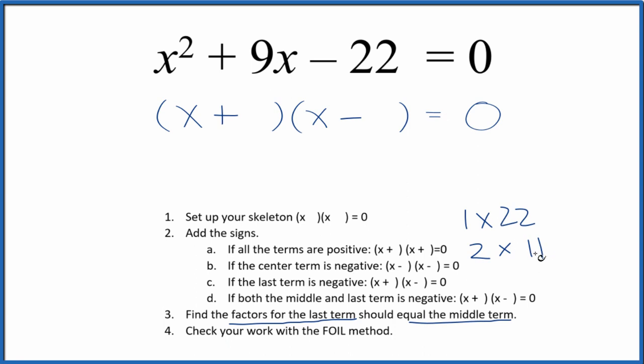I can see that two times 11, that would give me the 22 and the difference between two and 11, that's nine. So I want the nine to be positive. So I think what I'll do is I'll put the two right here and the 11 right here.